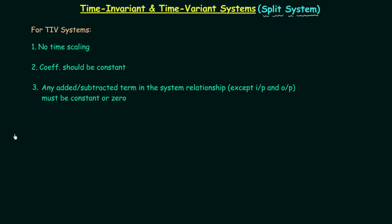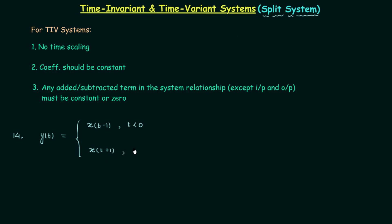The first problem in this lecture is actually the fourteenth problem overall — we completed problems one through thirteen in the last two lectures. In this lecture we will discuss the fourteenth and fifteenth problems, both based on split systems. The system relationship for problem fourteen is: output y(t) equals x(t−1) when t is less than 0, and equals x(t+1) when t is greater than or equal to 0.